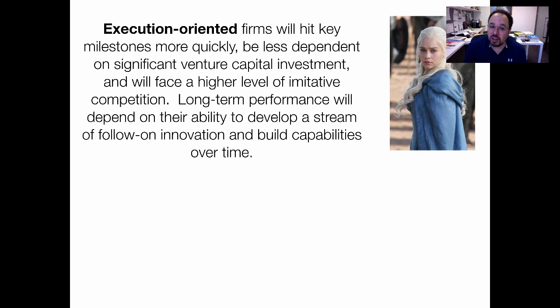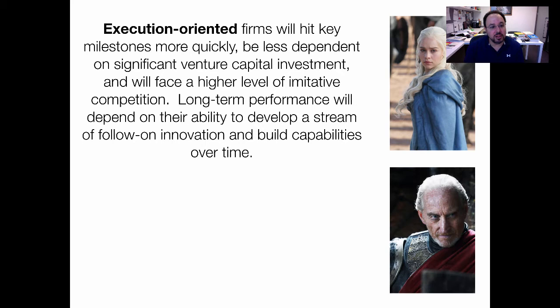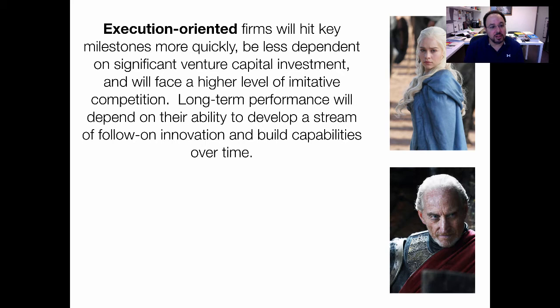Let me give you some examples. Firms more predisposed to execution will hit key milestones more quickly, be less dependent on significant venture capital investment, and will face a higher level of imitative competition. Their long-term performance depends on their ability to develop a stream of follow-on innovation and build capabilities over time. They may eventually develop a brand and some barriers to entry, but that is not the initial focus. Control-oriented firms, by contrast, will be slower to hit milestones, require much more upfront capital, and face less competition — with long-term performance resting on the strength of their intellectual property.